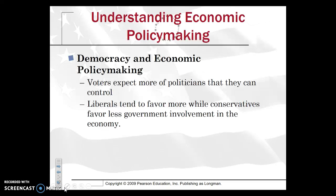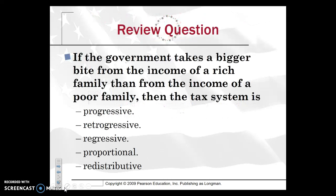Let's end here with a review question: if the government takes a bigger bite from the income of a rich family than from the income of a poor family, then the tax system is which of the following? And if you said choice A — progressive — you would indeed be correct.